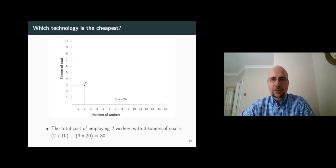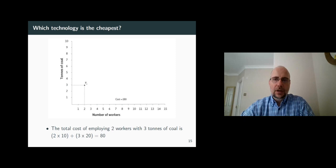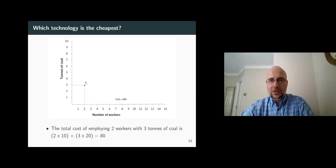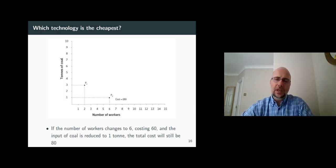For example, if you employ two workers and three tons of coal to get 100 meters of cloth, that will cost you 2 times 10 plus 3 times 20, which is 80. If we employ a different technology in which we have six workers and one ton of coal, the total cost will still be 80.